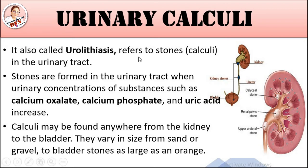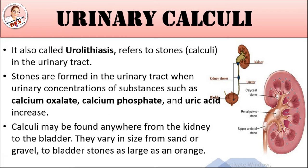If excretion is less than 45 mg per day, body formation is normal. If it increases to more than 75 mg per day, stone formation begins.